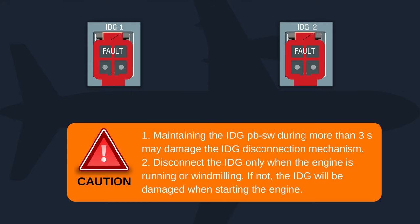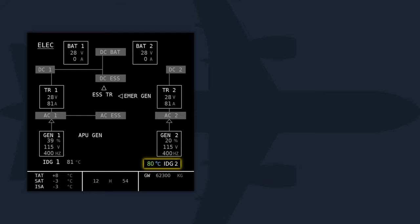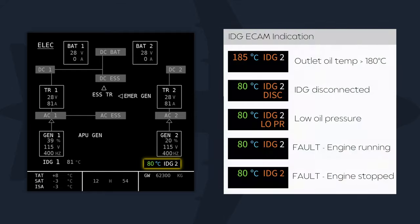Caution: maintaining the IDG push button switch for more than 3 seconds may damage the IDG disconnection mechanism. Disconnect the IDG only when the engine is running or windmilling — if not, the IDG will be damaged when starting the engine. The ECAM ELEC page displays the label IDG normally in white, changing to amber if the IDG outlet oil temperature exceeds 180 degrees centigrade, if the IDG is disconnected, or if IDG oil pressure is low.